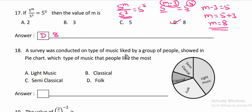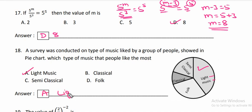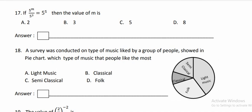A survey was conducted on the type of music liked by a group of people as shown in the pie chart. Light music is the biggest sector. Then we move on to the next question.